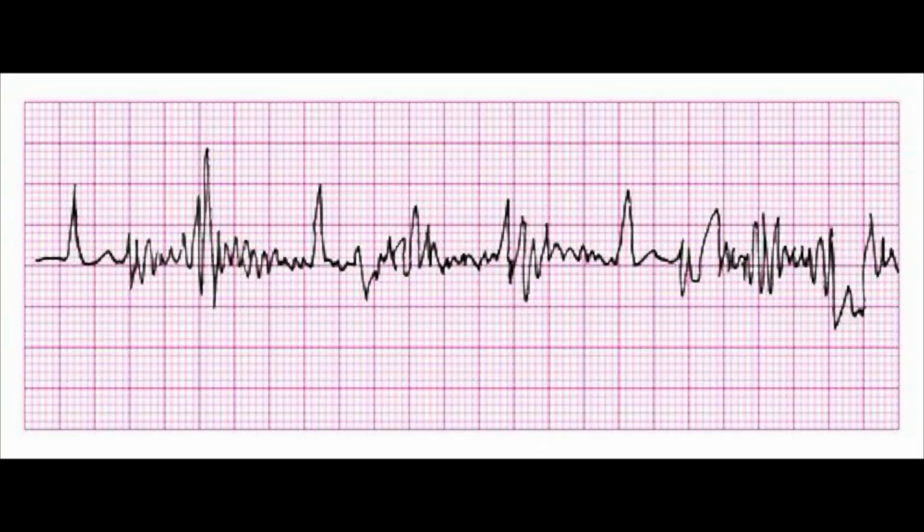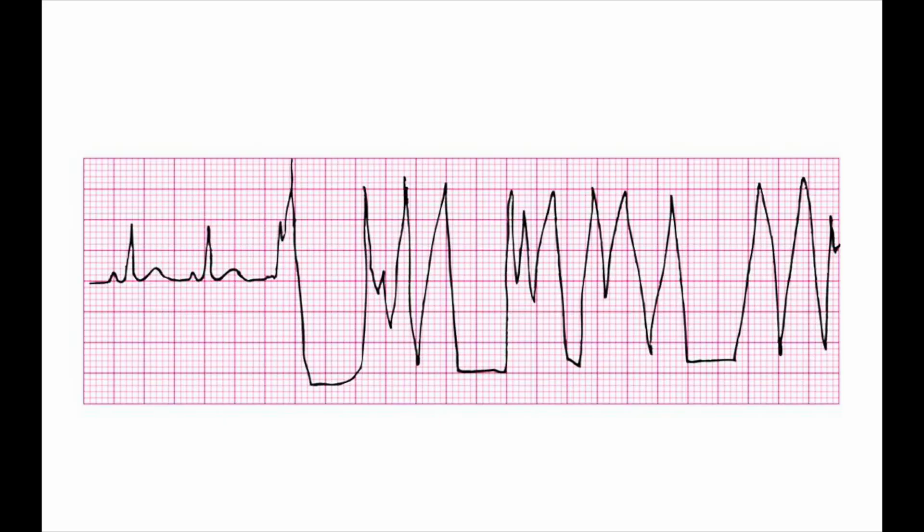So what do you do when you spot something that doesn't look right on the monitor? First, breathe. Then ask yourself: does this look like artifact? Artifact is movement you'll see on the monitor — it kind of looks like fuzzy grass. It can be caused by a patient moving around, a loose lead, or a nearby cell phone or electrical device. Also ask: is the patient actually still connected to the monitor? You'd be surprised how many times there's an asystole on the monitor but the patient isn't even wearing it — the electrodes are on the bed showing a false rhythm. Think about these things before you alert the nurse.